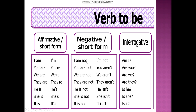Negative full and short forms: I am not. You are not — you aren't. We are not — we aren't. They are not — they aren't. He is not — he isn't. She is not — she isn't. It is not — it isn't.